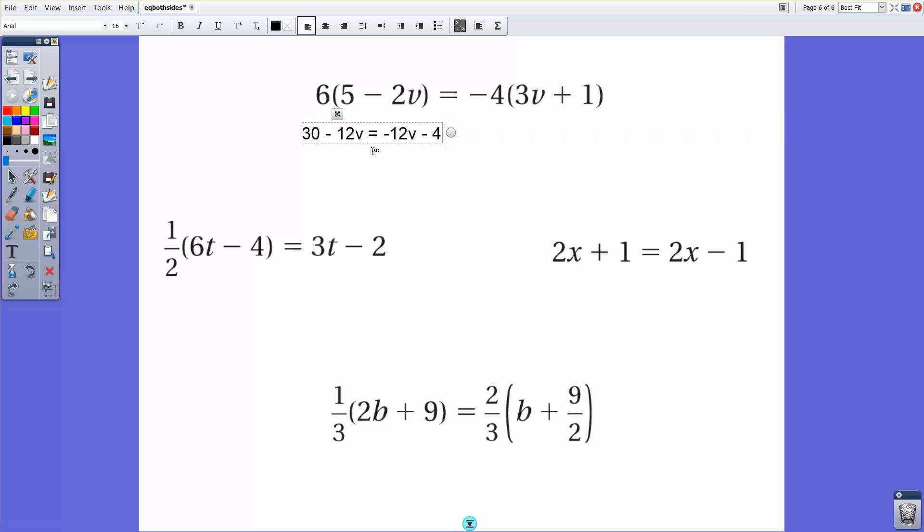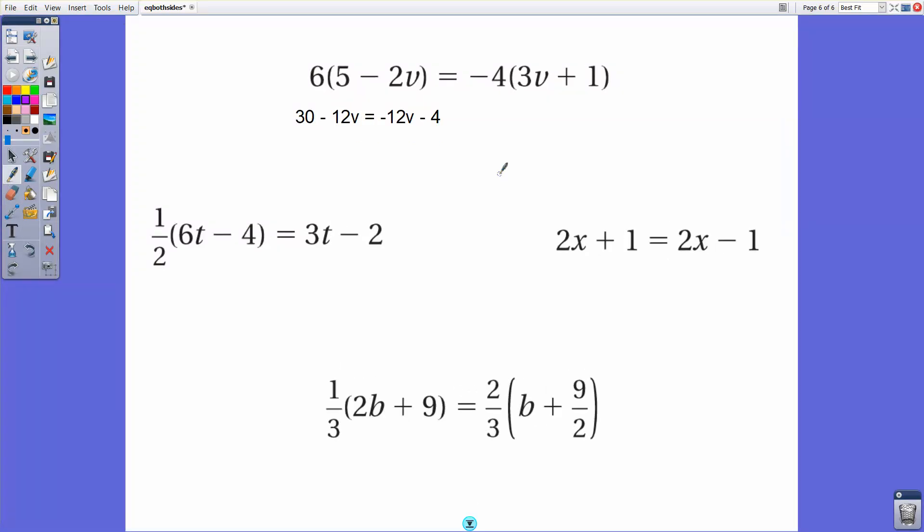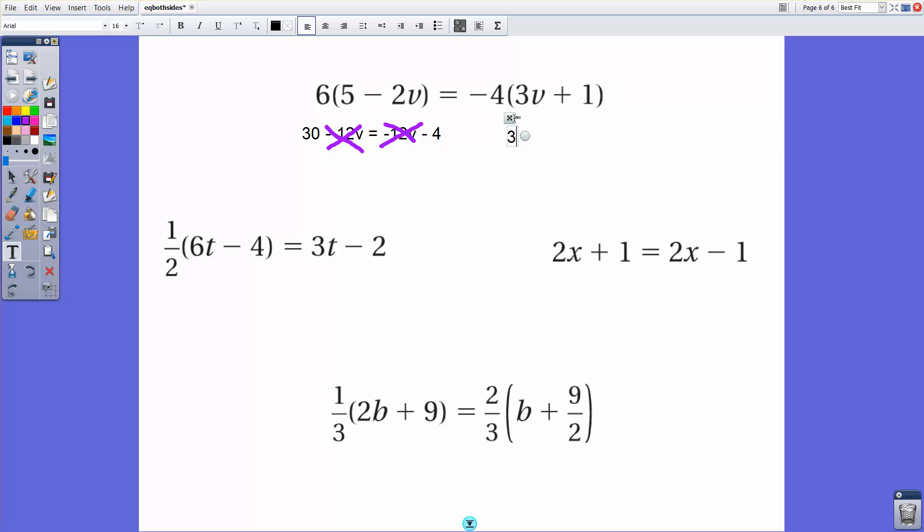Now here again, look, we've got negative 12v. We have negative 12v. When we have the same thing on both sides, and this is a little shortcut now, if we have the same thing, the same term on both sides, we can actually cross that entire term out. And if we cross that whole term out, we'll see the statement 30 equals negative 4.